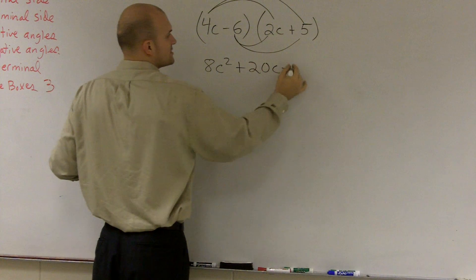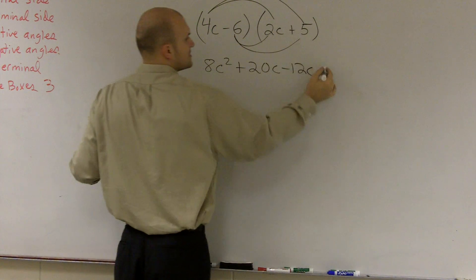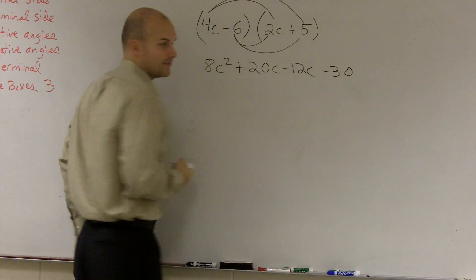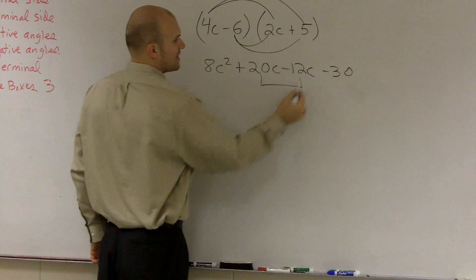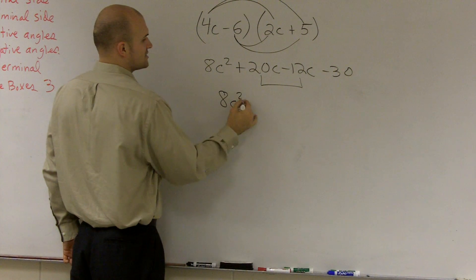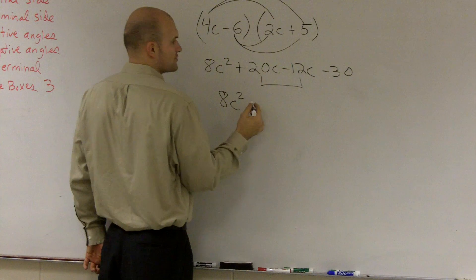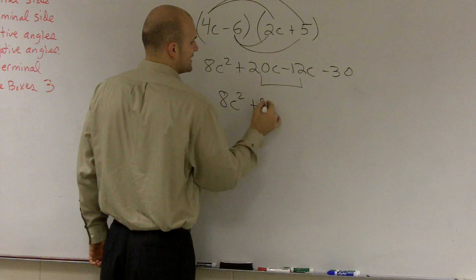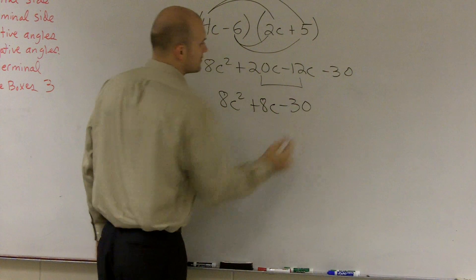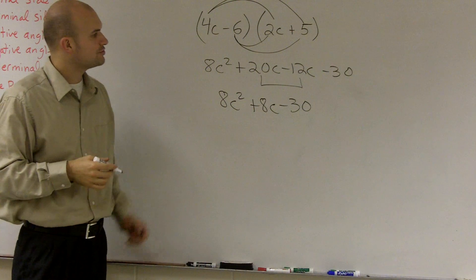Negative 6 times 2c is negative 12c. And negative 6 times 5 is negative 30. Then, finally, what I can do is combine my like terms. 8c squared, since these both have one c term, 20c minus 12c is a positive 8c minus 30. And that's how you multiply two binomials.